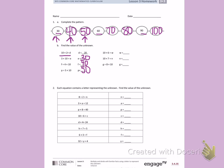10 times 6 equals W. W equals 60. 10 times 7 equals N. N equals 70. G equals 8 times 10. G equals 80.